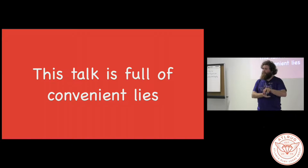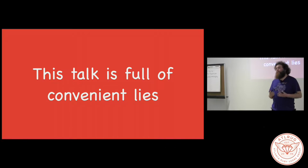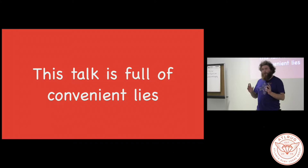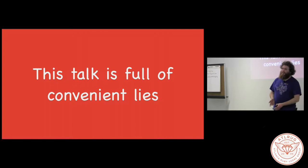This talk is full of convenient lies. A convenient lie is something that we as a group of developers believe or agree to be true so that we can actually work with computers as opposed to understanding the horrifying, unending chaos that actually lives inside them as we begin to take them apart. I suspect as a Ruby developer, you've never felt the need to understand what one of the billions of transistors inside your computer is actually doing on a day-to-day basis.